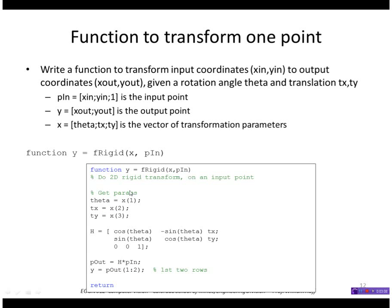Let's look at how to transform one point, writing a function to transform one point. We're going to pass in the coordinates of the point called pIn. y is going to be the coordinates of our output.